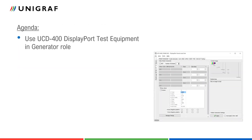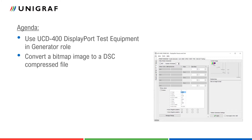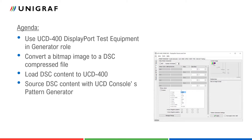Today we will use UniGraph's UCD-400 DisplayPort test equipment in generator role. We will show how to convert test images offline into a DSC compressed file. We will then load the converted files to UCD-400 and enable UCD-CONSOLE's pattern generator to send DSC content.